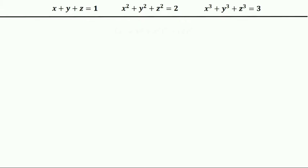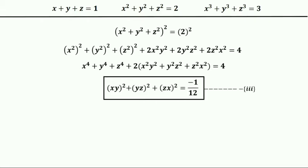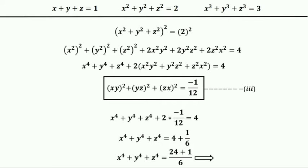Now I am going to square both sides of x²+y²+z². After using the (a+b+c)² formula we get x⁴+y⁴+z⁴ plus 2 times (x²y²+y²z²+z²x²) equals 4. Now using our equation three and substituting the value, after simplification we get x⁴+y⁴+z⁴ is exactly equal to 25 by 6. And that is our correct answer to the fourth power.